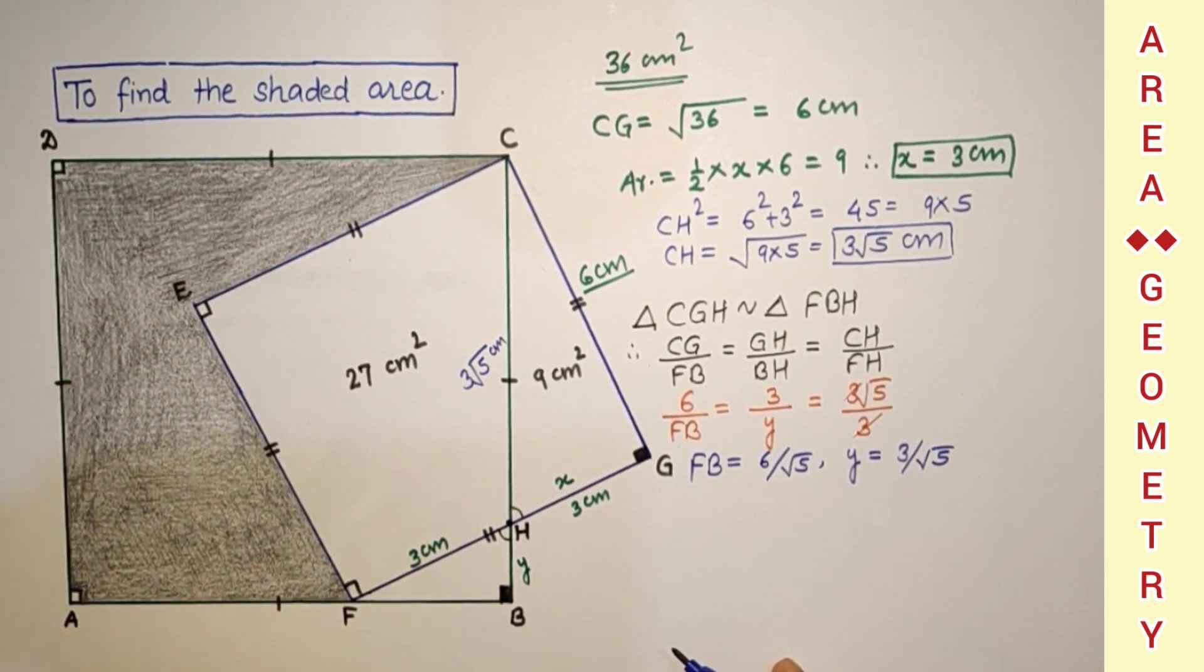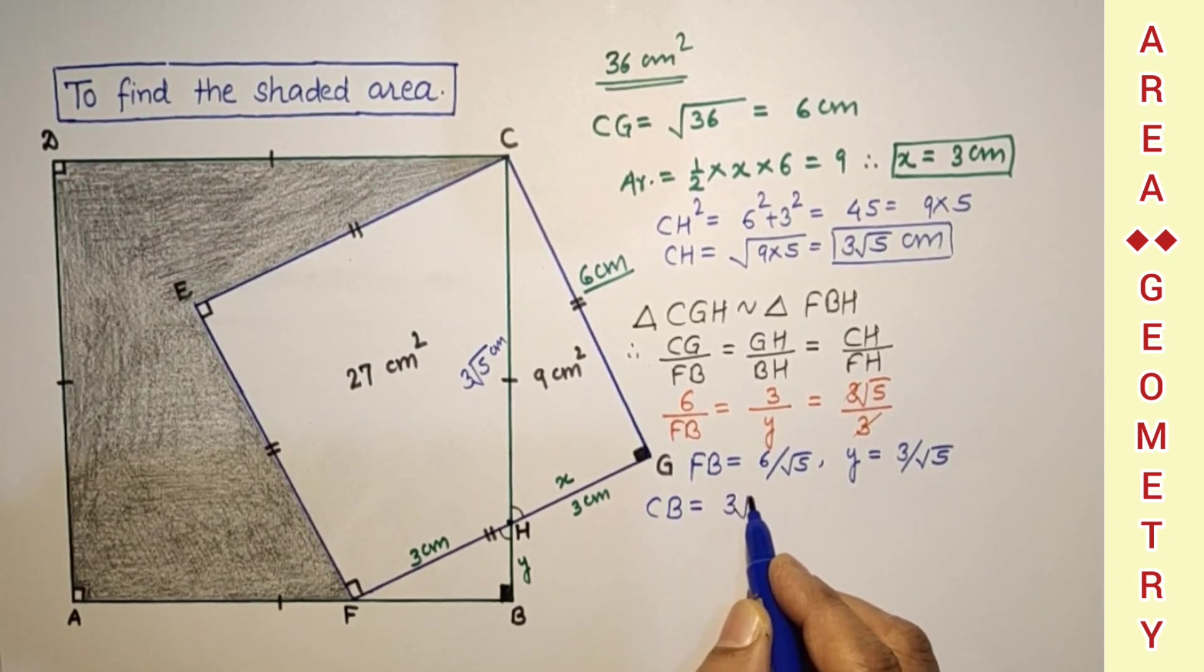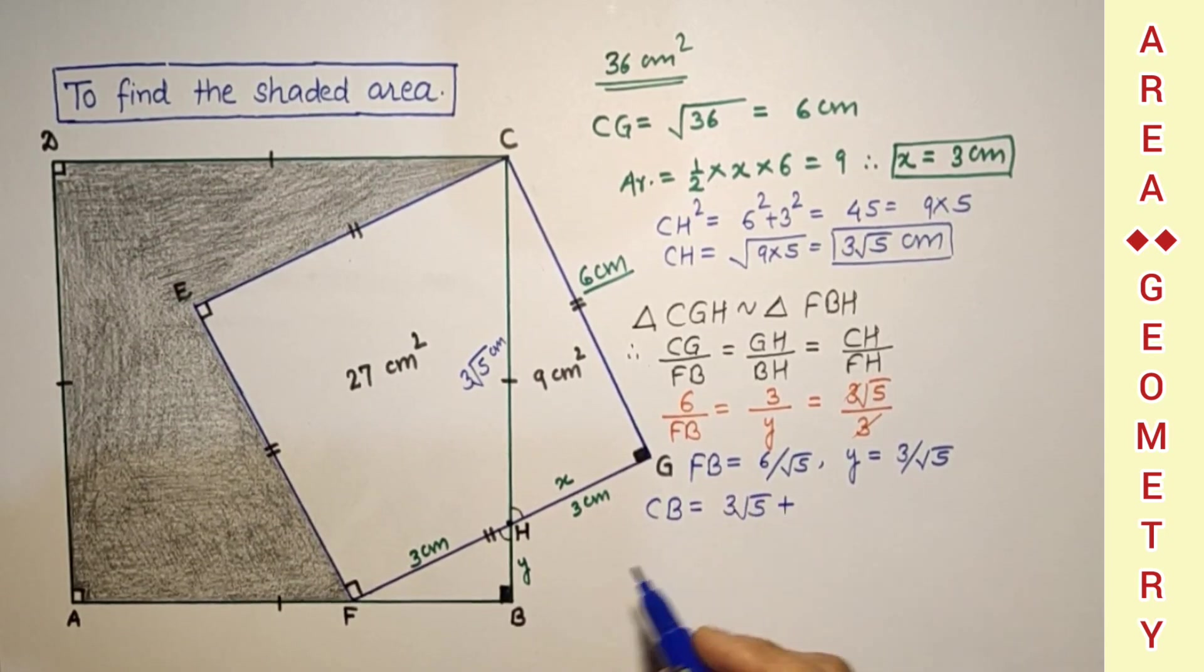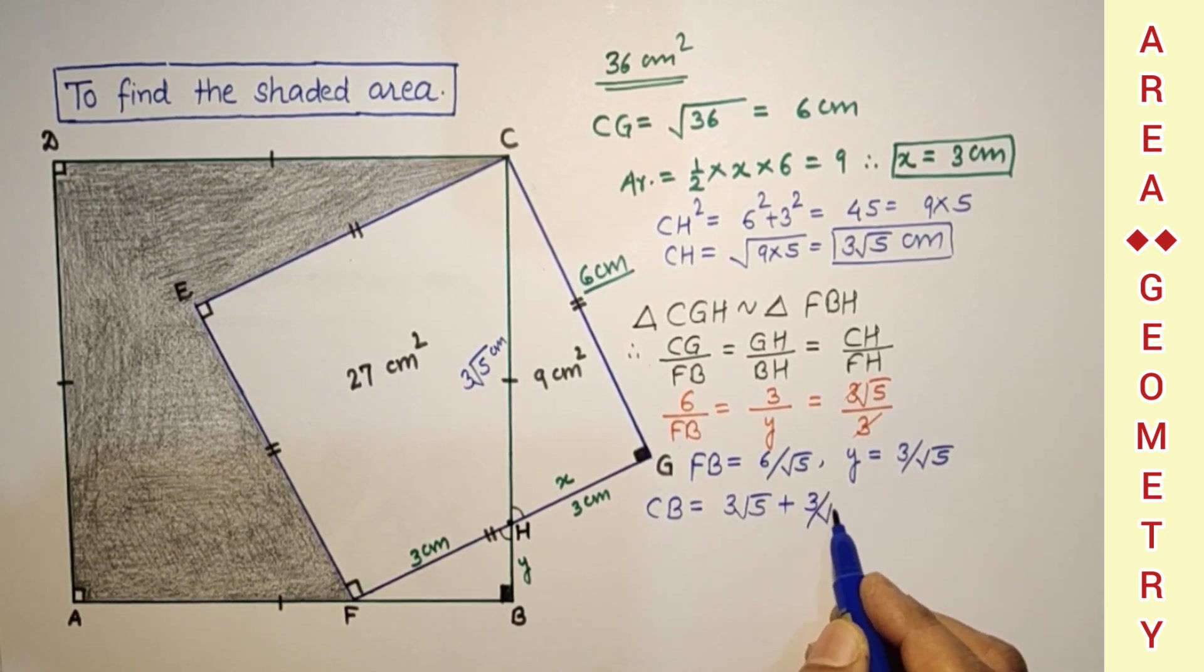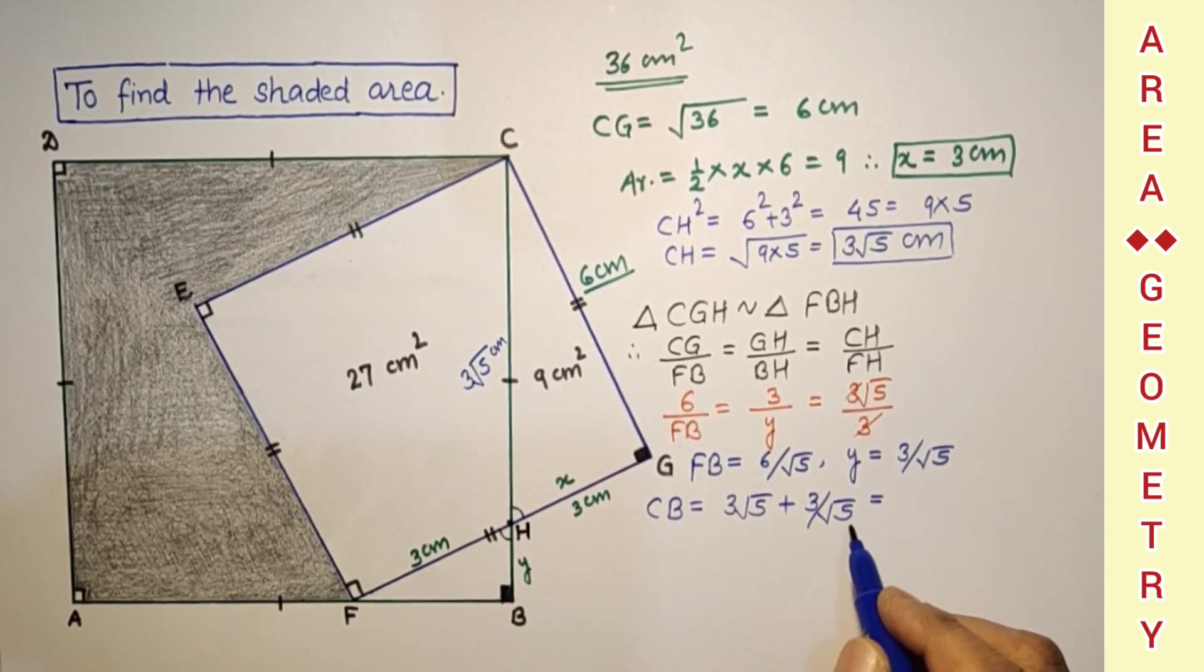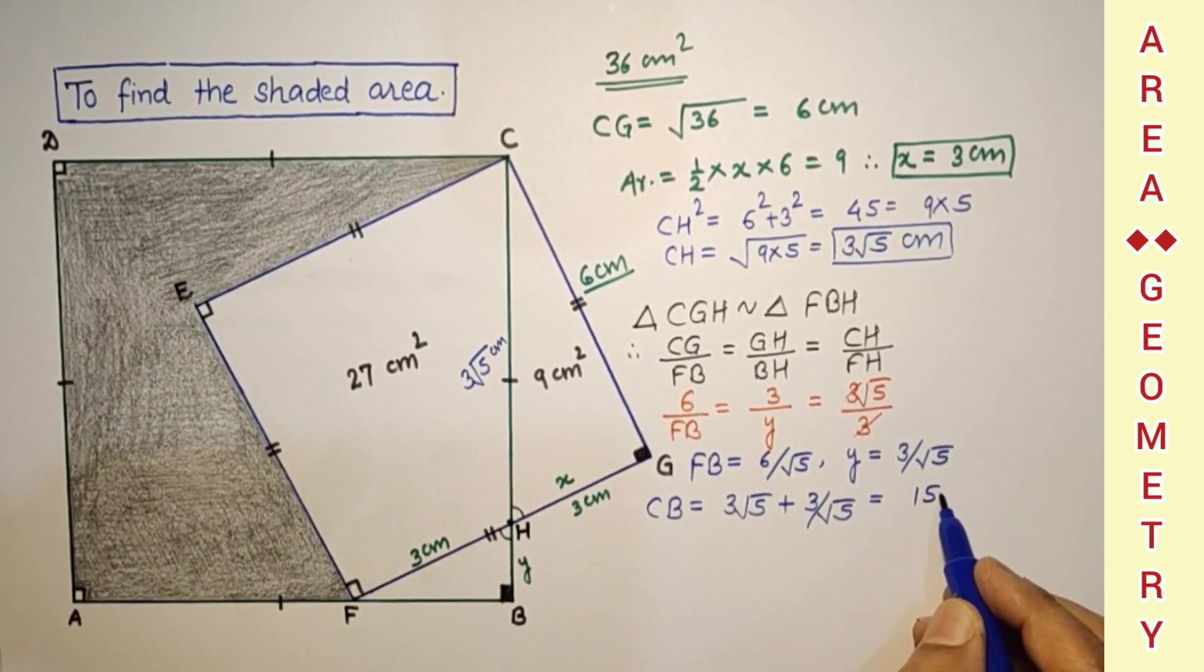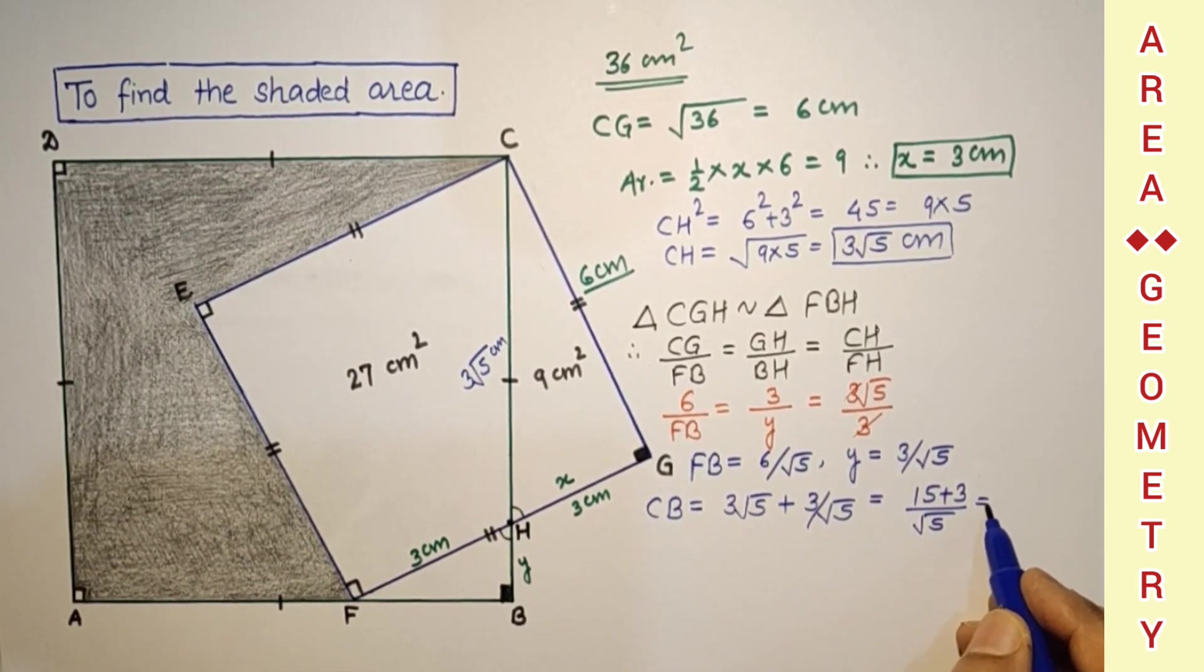So therefore CB is equal to 3 root 5 plus HB which is 3 by root 5. Taking LCM, 3 root 5 into root 5 which is 15 plus 3, which is 18 by root 5. So therefore CB is 18 by root 5.